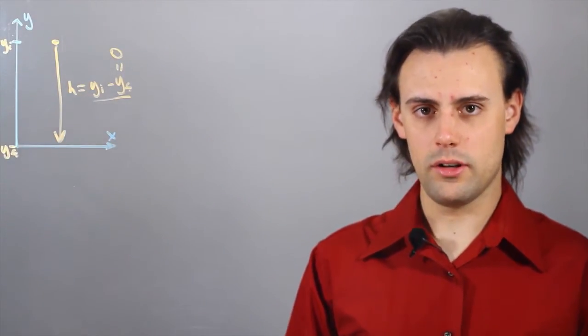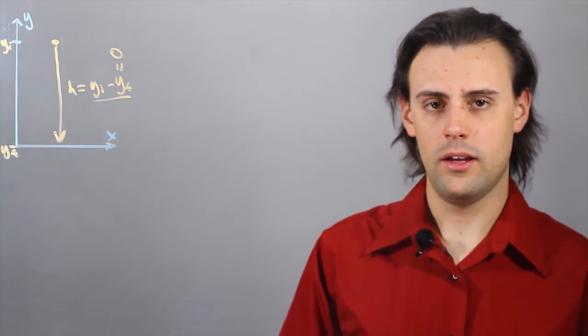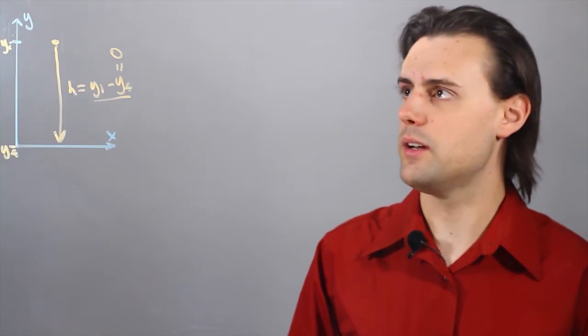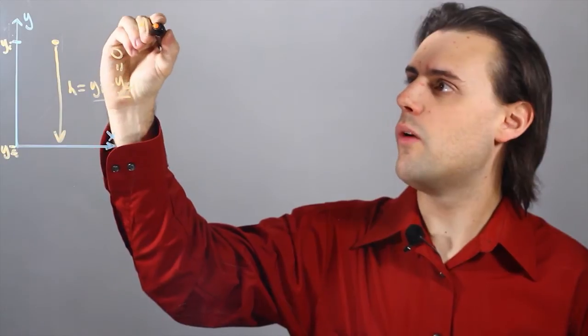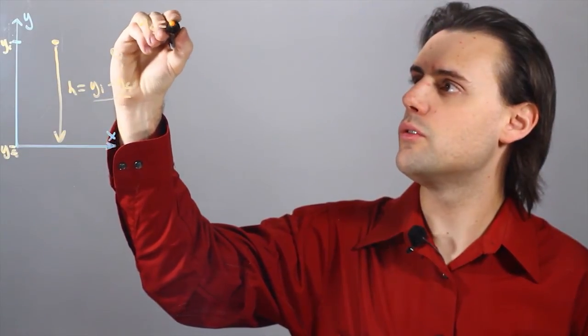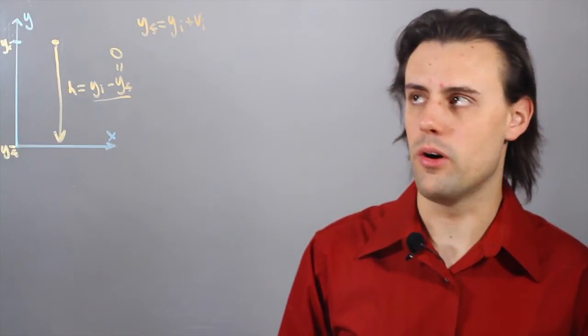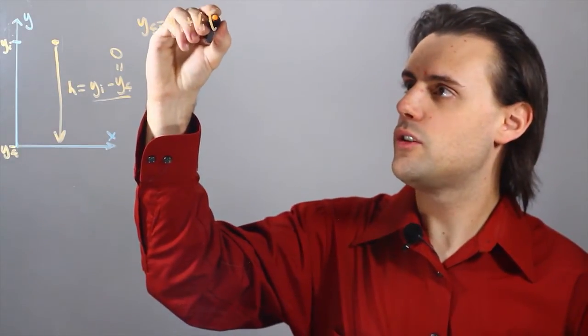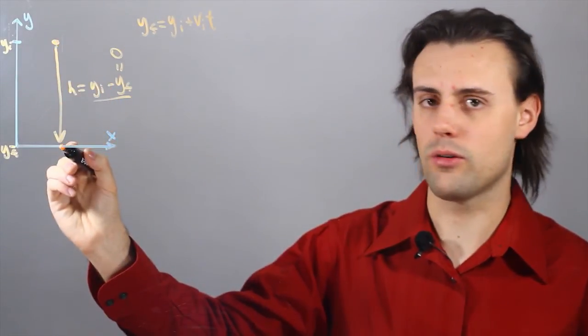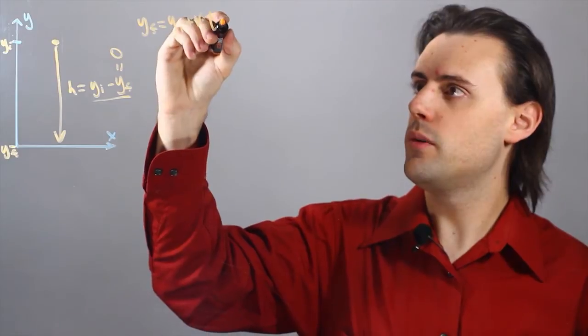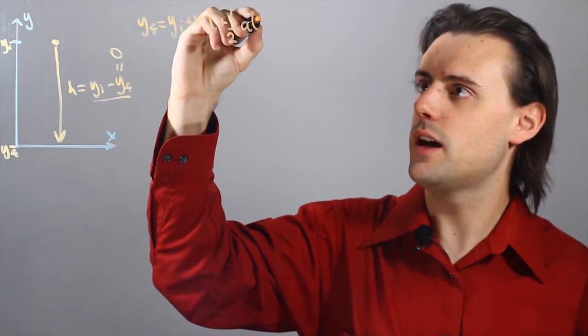Now the equation I'm going to want to use to derive the gravitational acceleration is the position equation from kinematics, which I can write for the y direction as y final is equal to y initial plus v initial, which is the initial velocity of the ball times the total time it took for the ball to go from the initial height back down to the ground plus one-half the acceleration times the time squared.